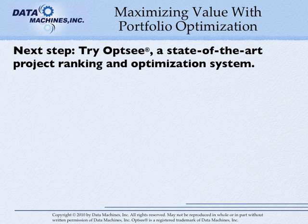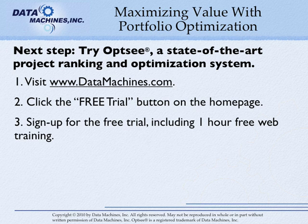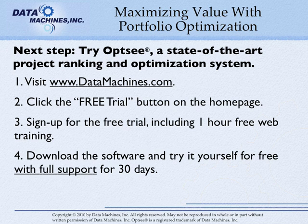If you want a project portfolio application that lets you use optimizations like we have just talked about, then you should try Opsy, our project portfolio management tool. Simply go to www.datamachines.com, click on the free trial button, and sign up. I'll personally arrange for a free one-hour training where you can see exactly how what we just talked about works and ask any questions that you like. Then you can try Opsy for yourself for free in your business with full support for 30 days. It may be the best investment of an hour of your time that you'll make this year. Thanks for listening, and I'm looking forward to hearing from you.